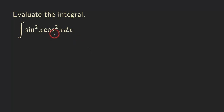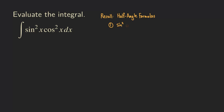So what are we going to do here? We can use the half-angle formulas. Let's recall them. The sine version is: sine squared x equals one-half times (1 minus cosine of 2x).